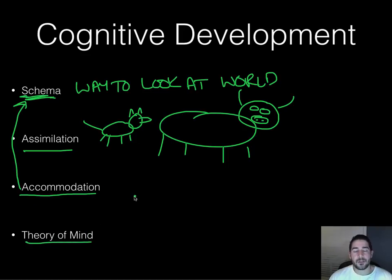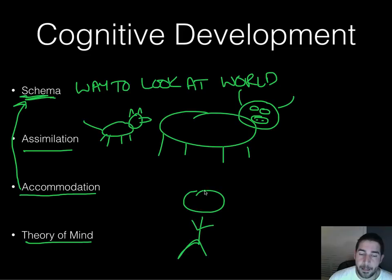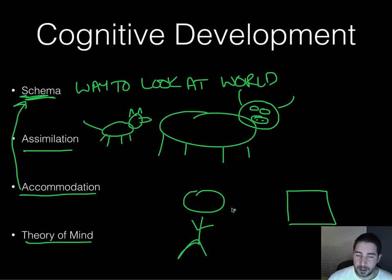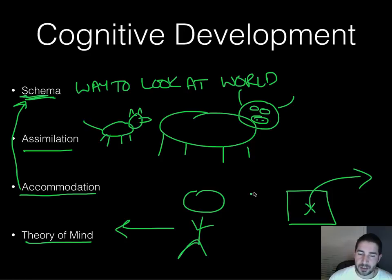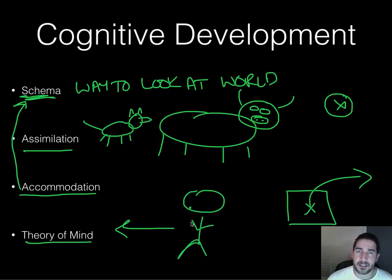The last vocabulary term is theory of mind — being able to see somebody else do something and try to understand how they would be thinking, rather than assuming they're thinking the exact same thing you are. A common example: a person sees a bear put into a box, then leaves the room. Someone moves the bear. When asked where the returning person will look for the bear, a child without theory of mind will point to where the bear actually is — because that's what they would do. Someone with theory of mind says, wait, this person didn't see what I saw, so they'll still look in the original box.